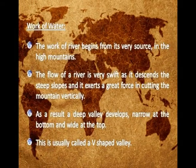The work of a river begins from its very source in the high mountains. The flow of a river is very swift as it descends steep slopes and exerts a great force in cutting the mountain vertically. As a result, a deep valley develops — narrow at the bottom and wide at the top — usually called a V-shaped valley.